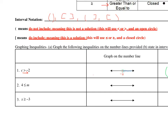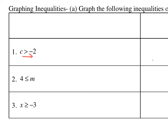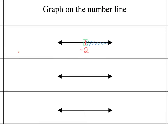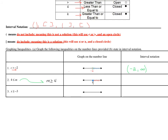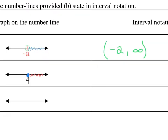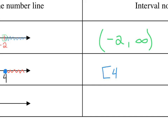Our next example says 4 is less than or equal to m. That means the same thing as writing m greater than or equal to 4. So I want all the values of m that are greater than or equal to 4. I'm going to put my 4 in, shade to the right, and it's a closed circle because it's greater than or equal to. In interval notation, I simply have my 4 with a bracket, because it's always a bracket when it's greater than or equal to. And it's going on forever to the right, so I do infinity — but we do a parenthesis for infinity always.